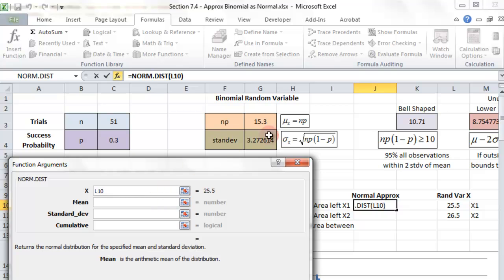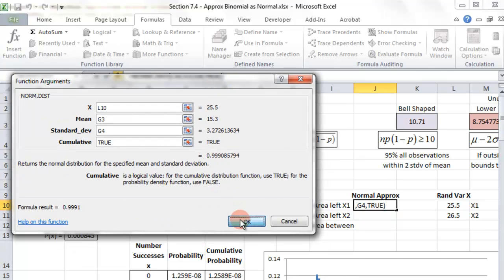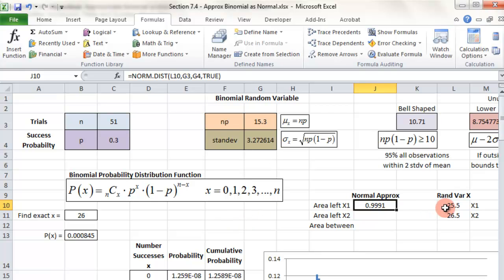The mean, luckily I don't have to do any calculations, but if I did, this is what I would have to do. My worksheet already calculates that for me, it's right there. Standard deviation, this is the calculation you would have to do, but it calculates it for me right there. And then cumulative, yes, that gives me true all the way. Then I just hit OK. So that gives me the area to the left of this 25.5.